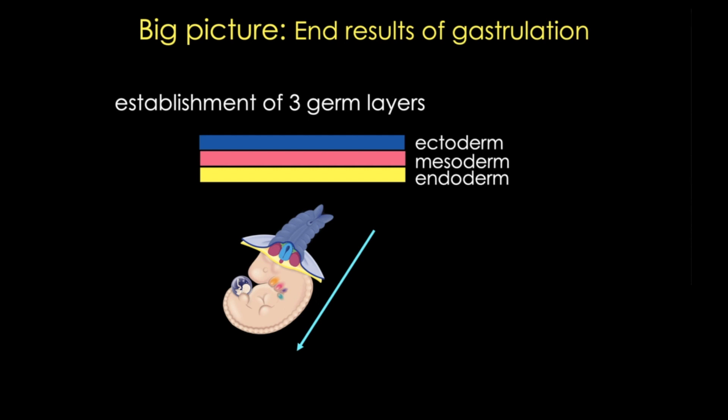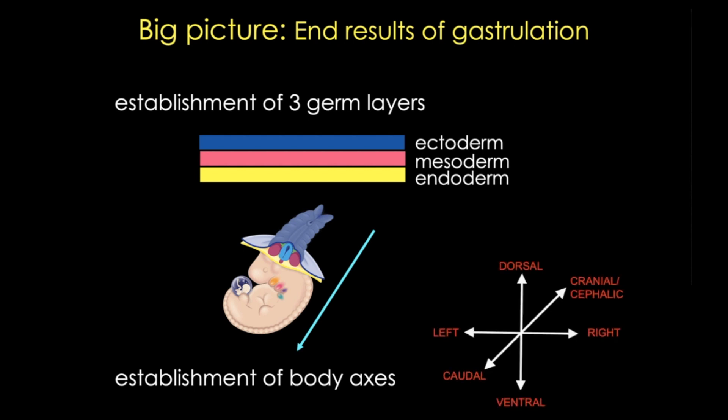After gastrulation we can really see the establishment of all the body axes. Even though some specifications, such as the cranial-caudal axis, begin at blastocyst stages, by the end of week three we see a trilaminar embryo where cells are positioned to take on specific fates over the next several weeks. Essentially, the stage is now set for organogenesis.